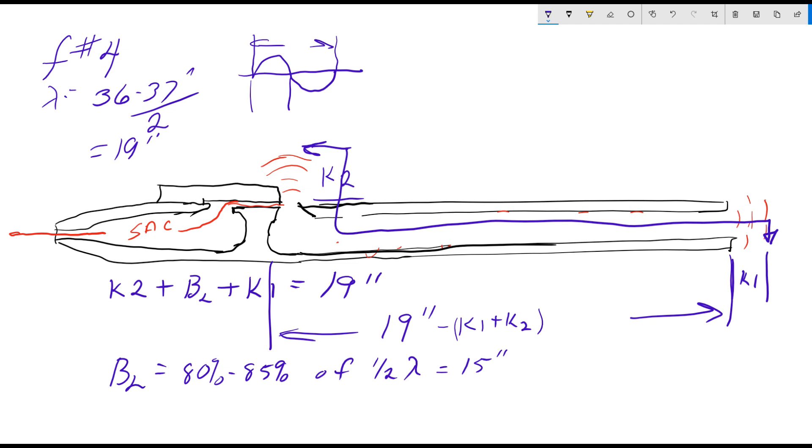So if the wavelength is 19 inches, and we multiply that times say 80%, we have a bore length of 15 inches. This is not precise, but it's going to be in that ballpark. Actually, it's 15.2 inches. So this distance here is 15 inches.